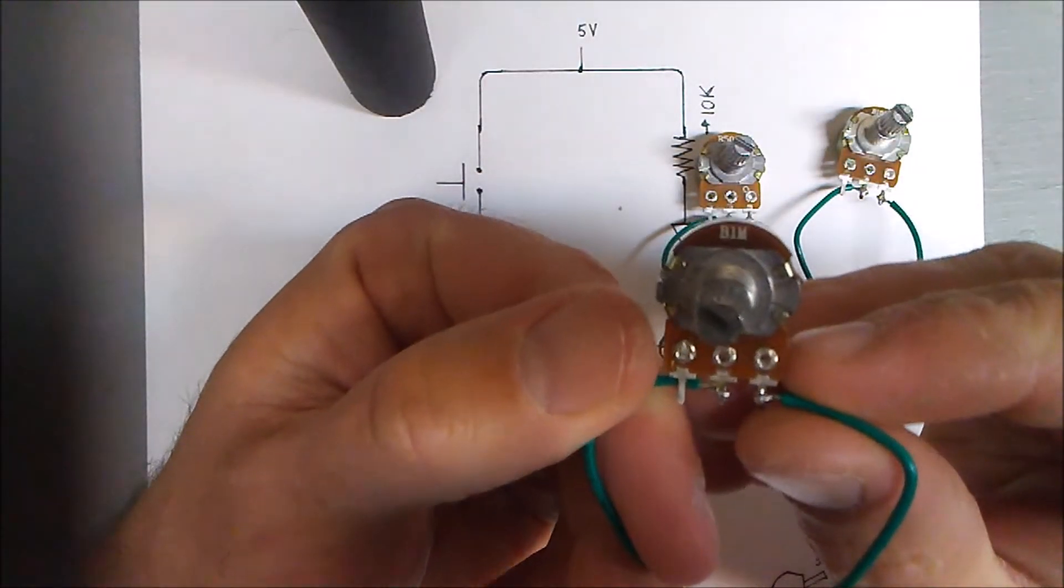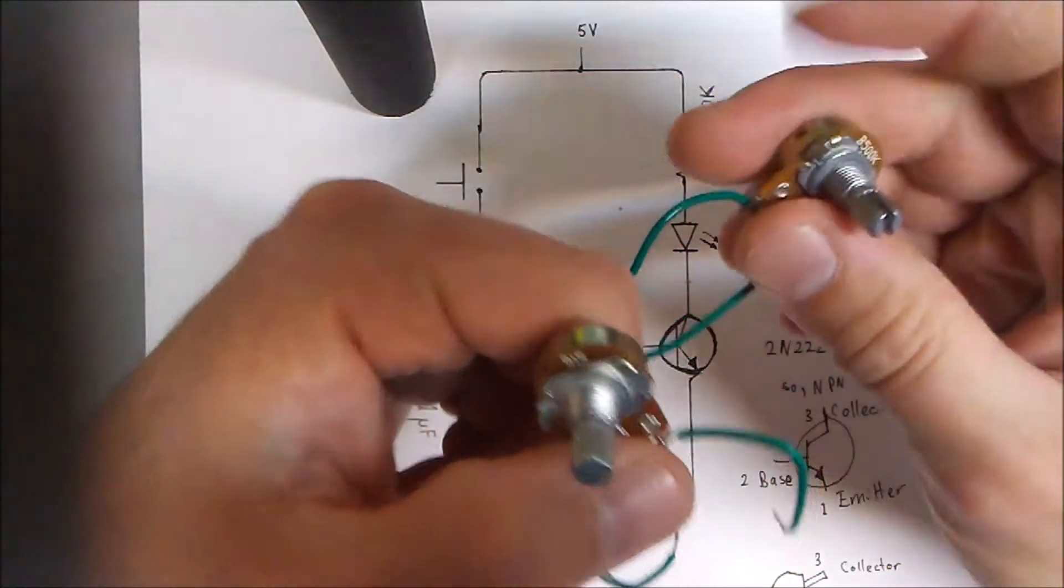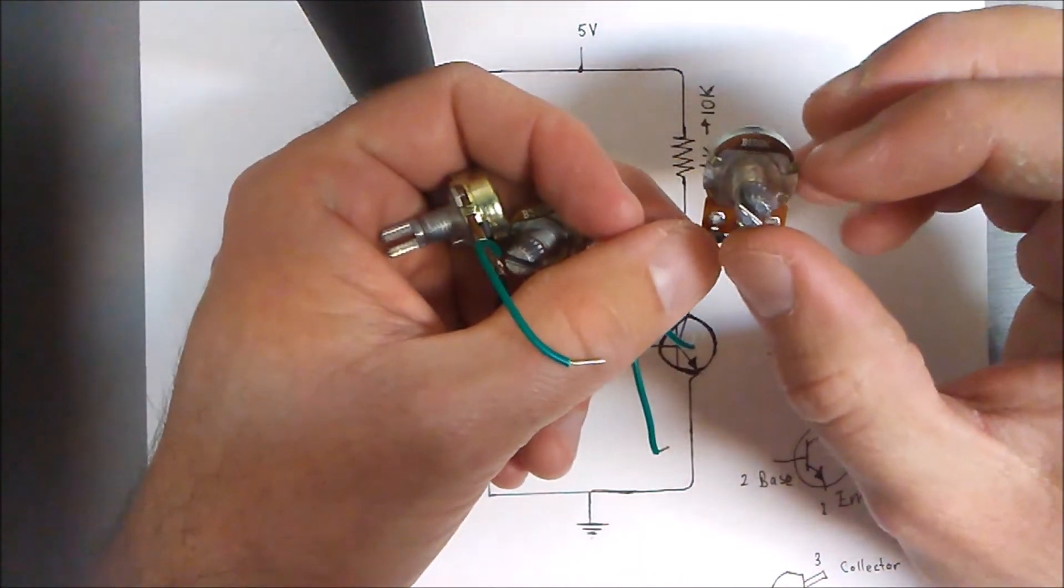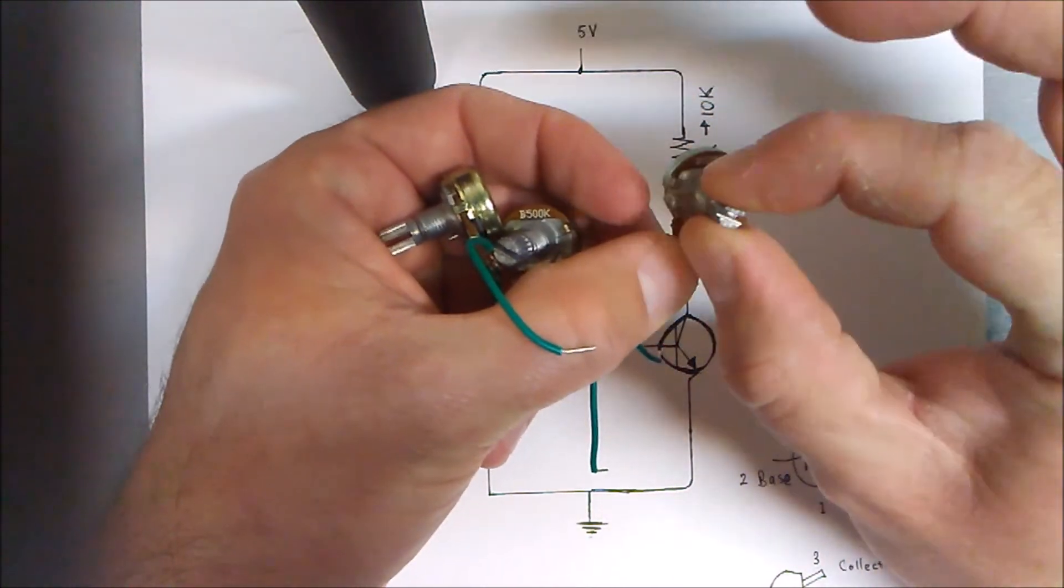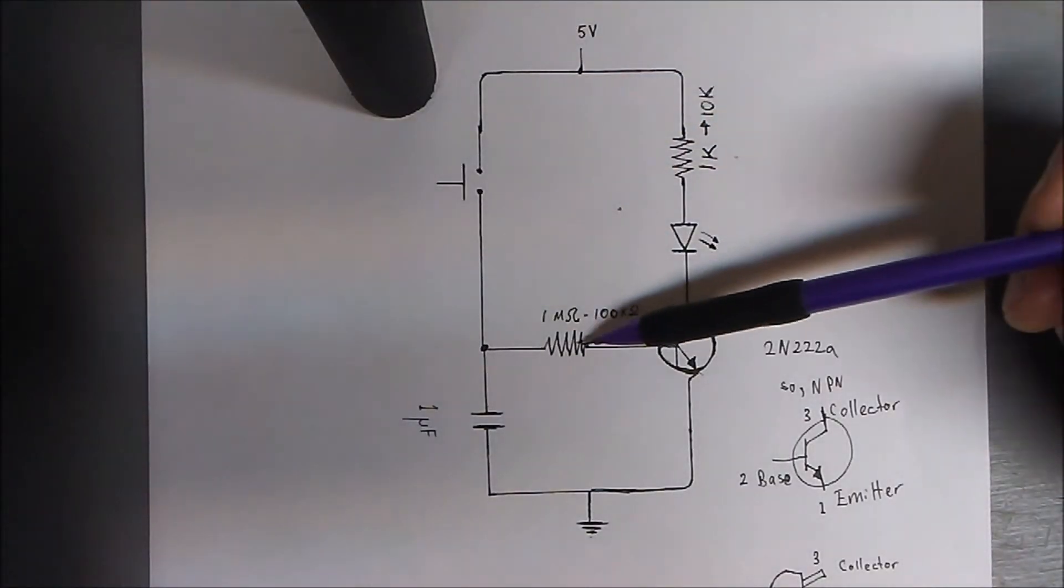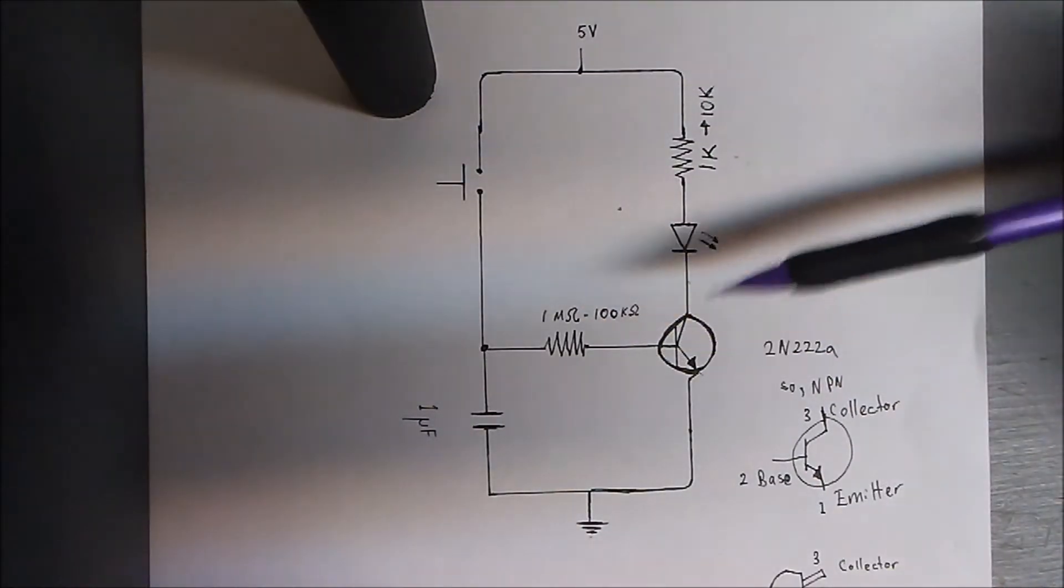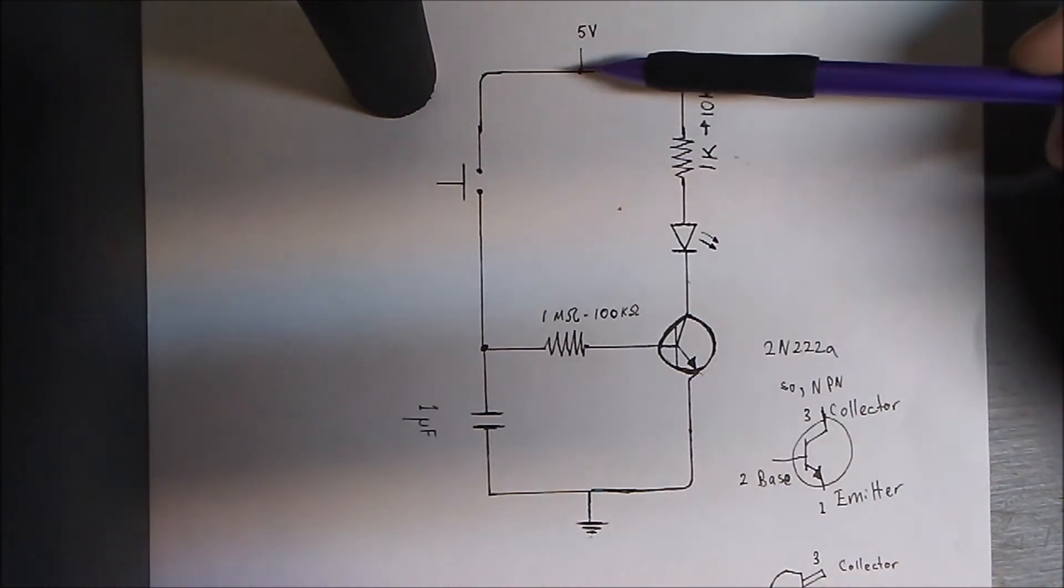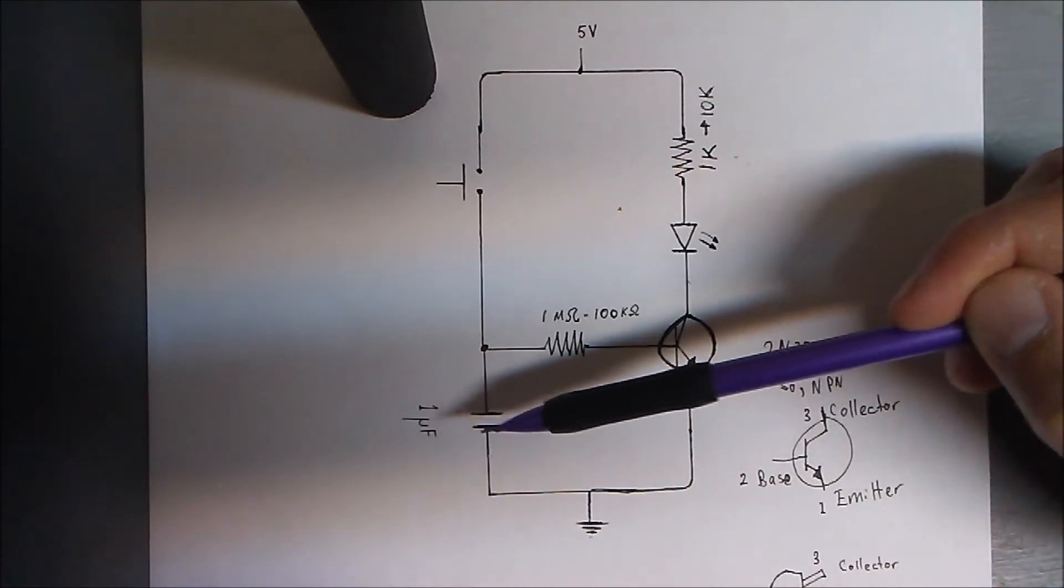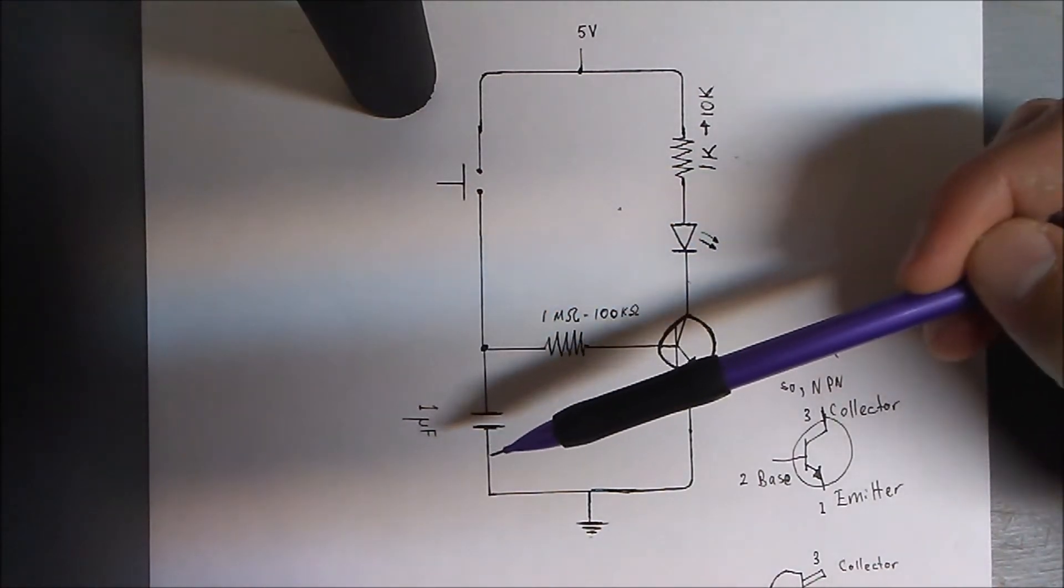This is a 1 mega ohm variable potentiometer, this one's 500k, and this one is 100k. Having my circuit hooked up, I was playing around with these variable potentiometers on the base of the transistor. When the push button is pressed, power from the supply goes through and charges this capacitor here.